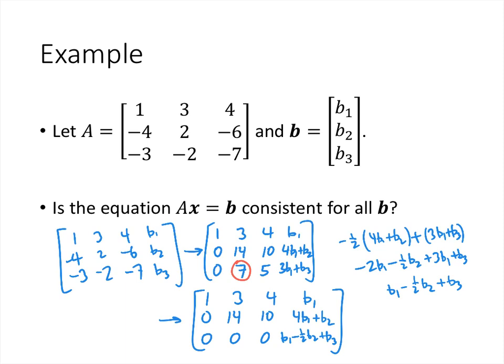We're now in echelon form. The question is: is this equation consistent? We should be worried about the expression B1 - 1/2 B2 + B3 in the last position. If that number is not 0, then it's a pivot in the last column of the augmented matrix, which tells us we don't have a solution — the original system is inconsistent. So the answer for all b is no, because we can find values of B1, B2, B3 that make that expression nonzero.